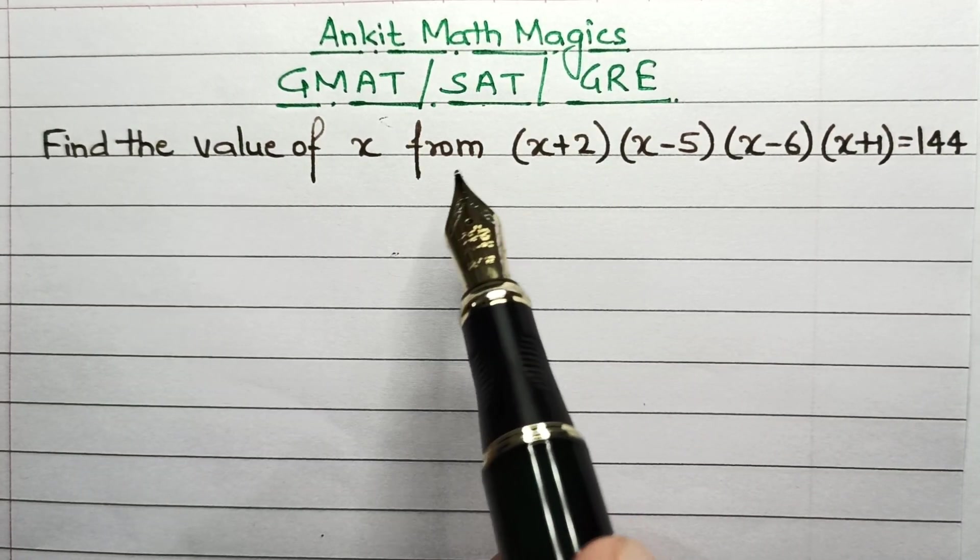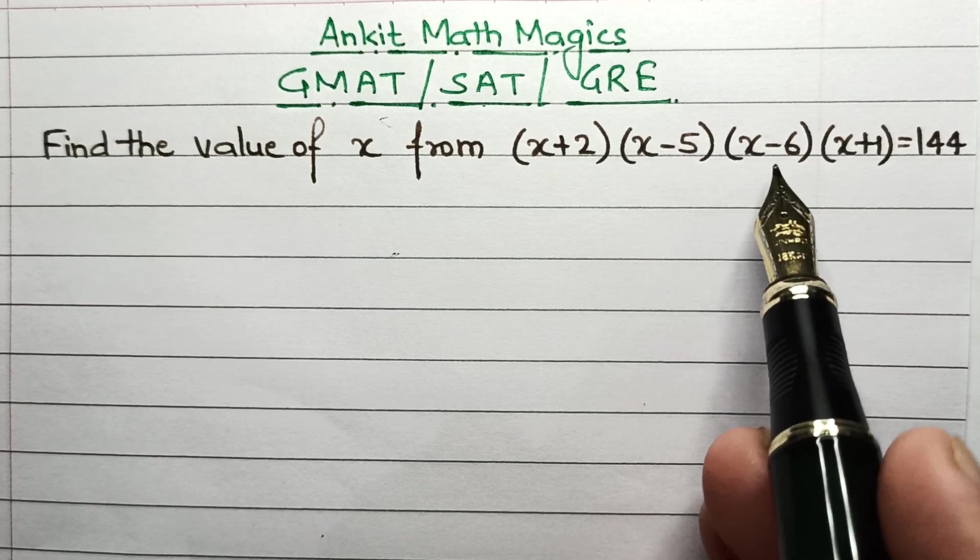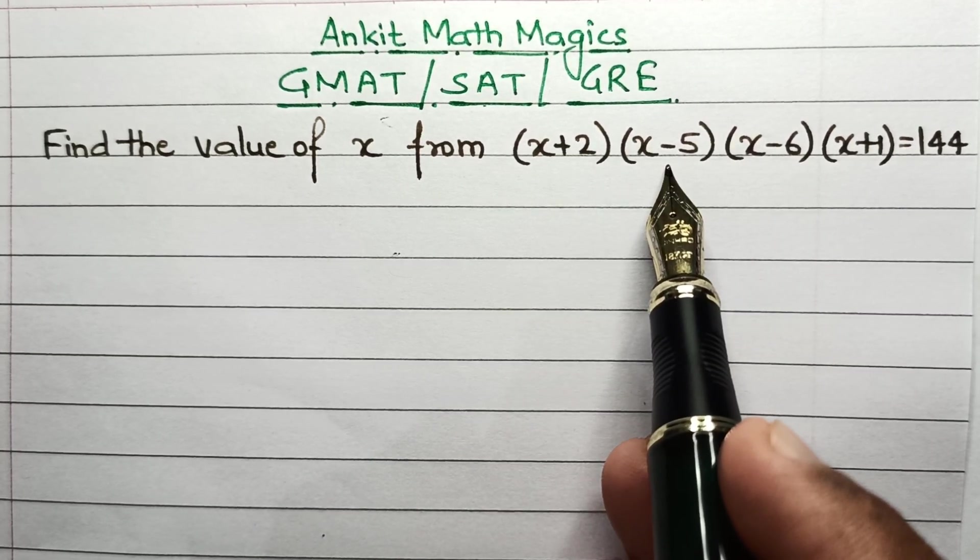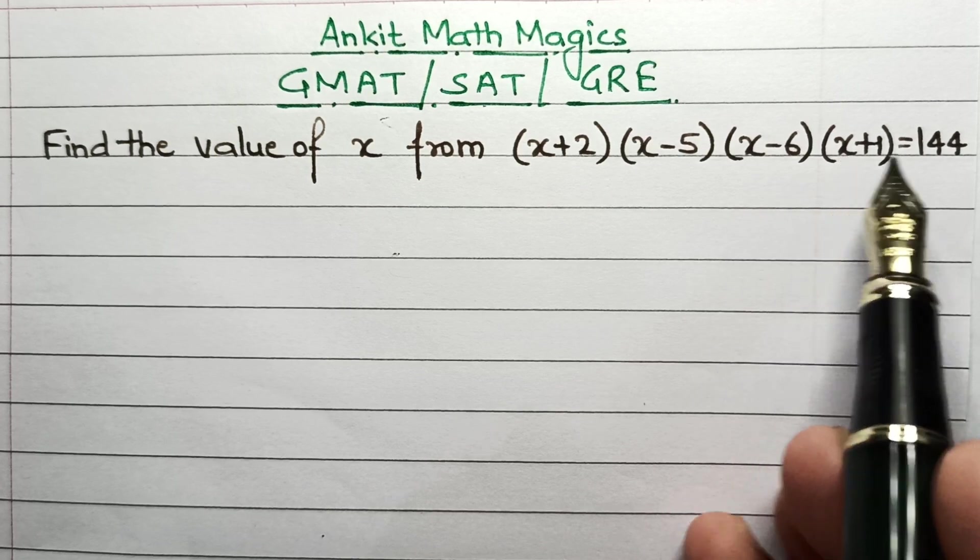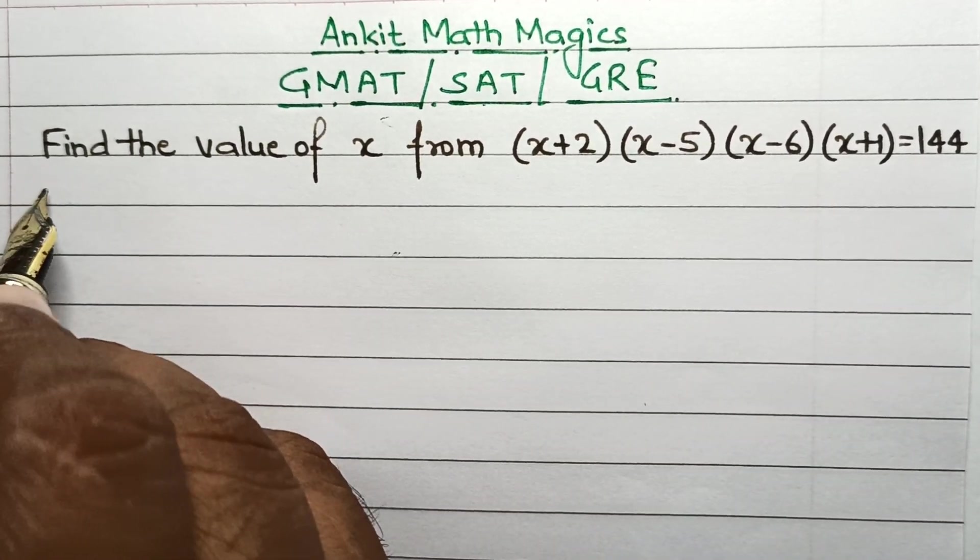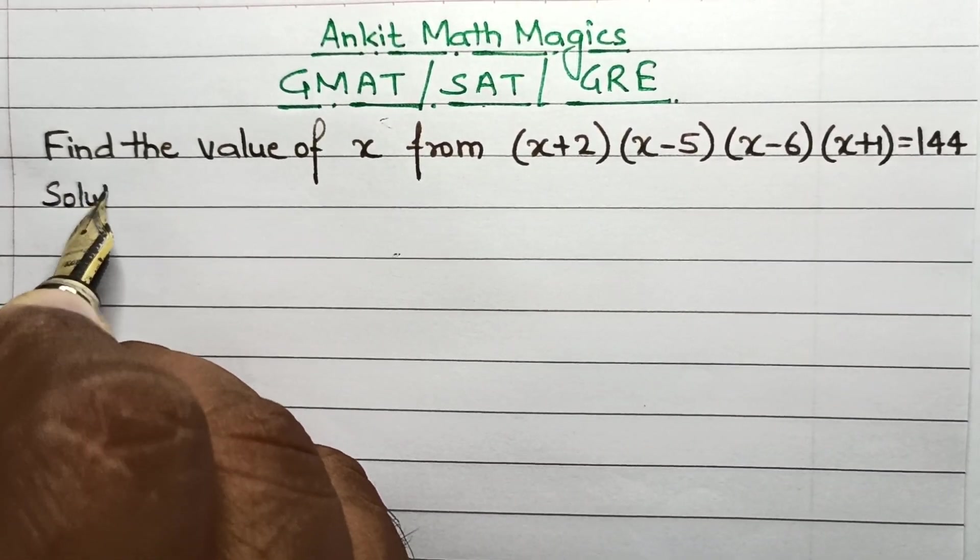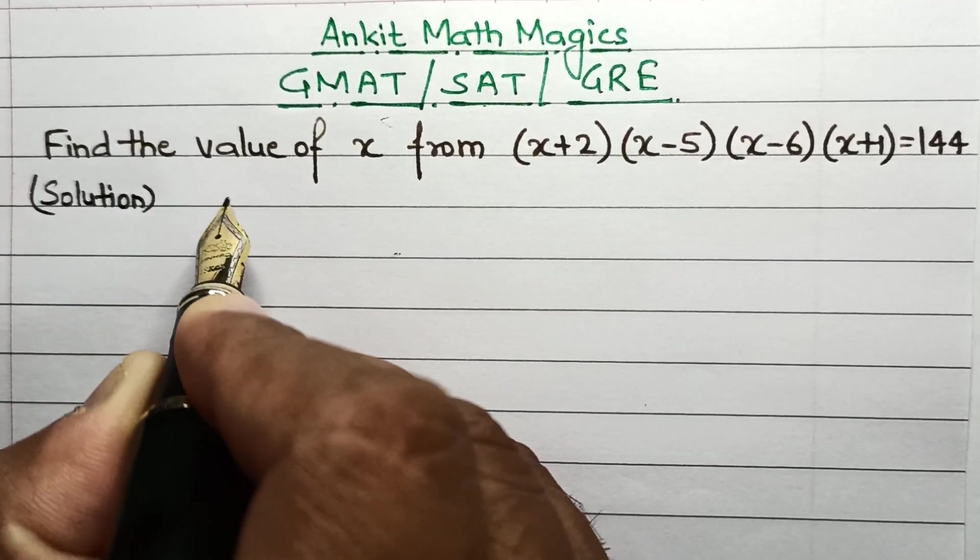So right here we have a really interesting math problem based on the concept of algebra: (x+2)(x-5)(x-6)(x+1) = 144, and we will have to figure out a way to solve this for the value of x.